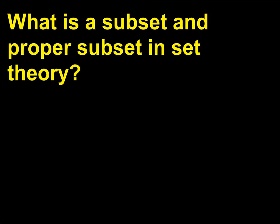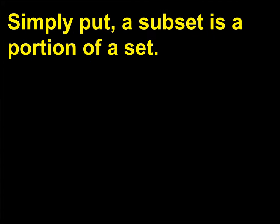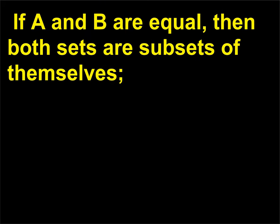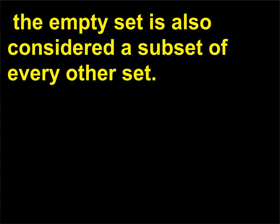What is a subset and proper subset in set theory? Simply put, a subset is a portion of a set. If set B is a subset of set A, then all elements of set B are also elements in set A. If A and B are equal, then both sets are subsets of themselves. The empty set is also considered a subset of every other set. A proper subset is a subset other than the set itself.